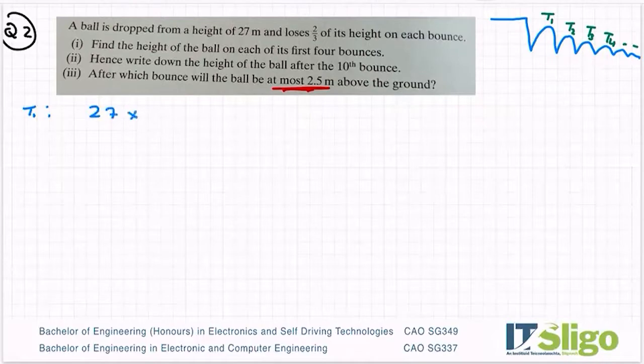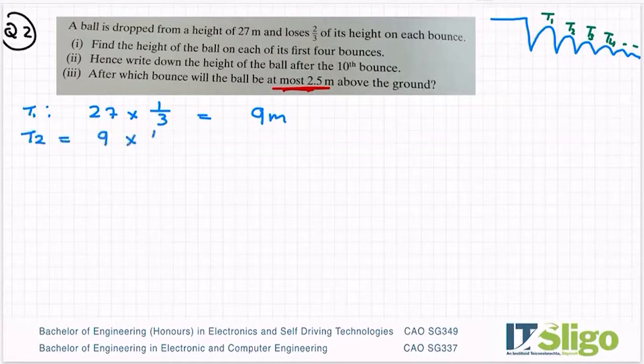It loses two-thirds of its height. So therefore, it only has one-third of its height left. So nine meters. It loses two-thirds, so it only has one-third left. So nine meters. T2 would be that nine meters. It'll only have, it'll lose two-thirds of its height, so it'll only have one left. So it'll be three.